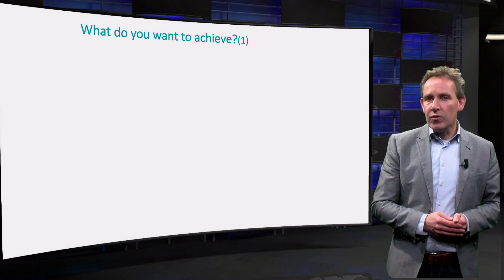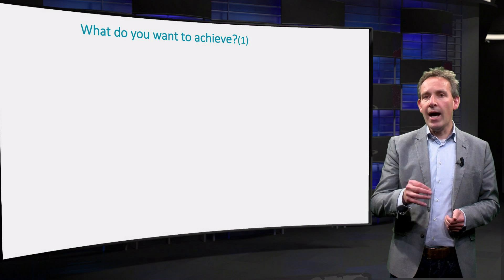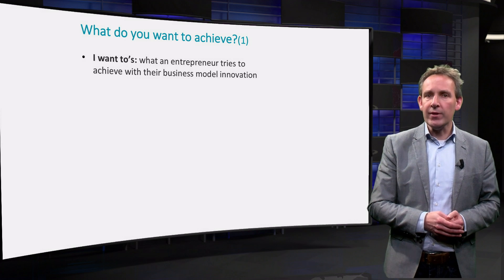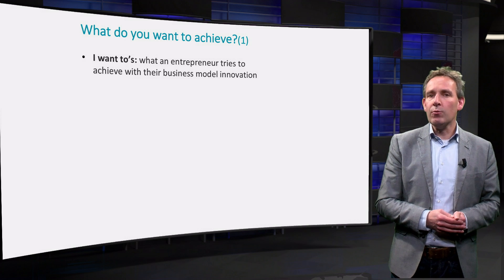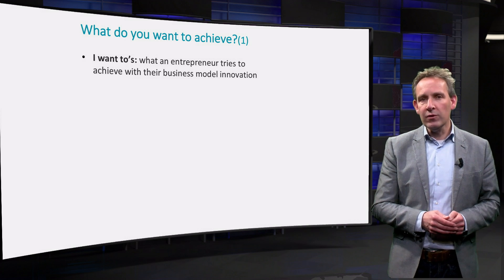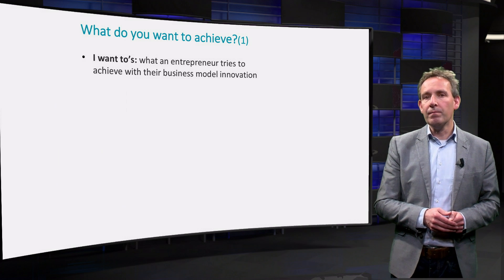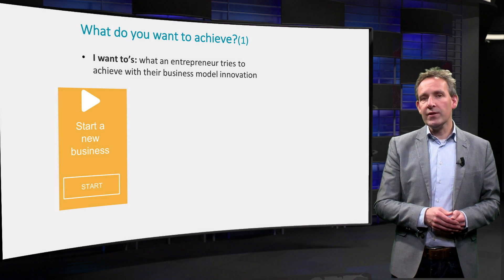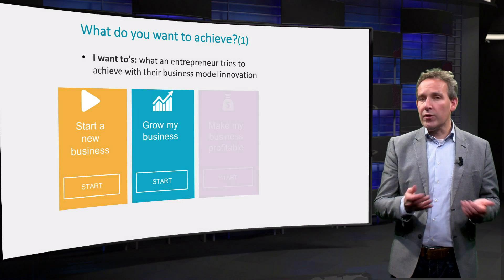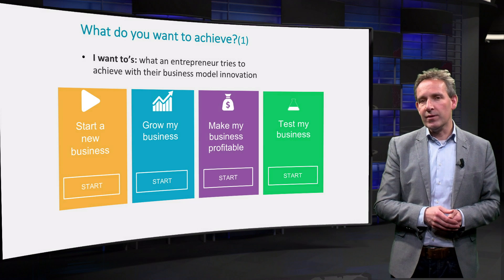Let's introduce two new useful concepts. The first concept is 'I want to.' It describes what an entrepreneur like you typically wants to achieve with business model innovation. Four examples that are often found in practice are: I want to start a new business, I want to grow my business, I want to make my business profitable, and I want to test my business.